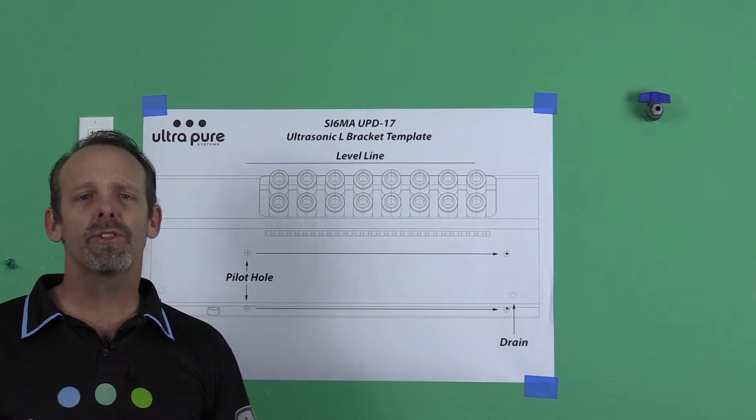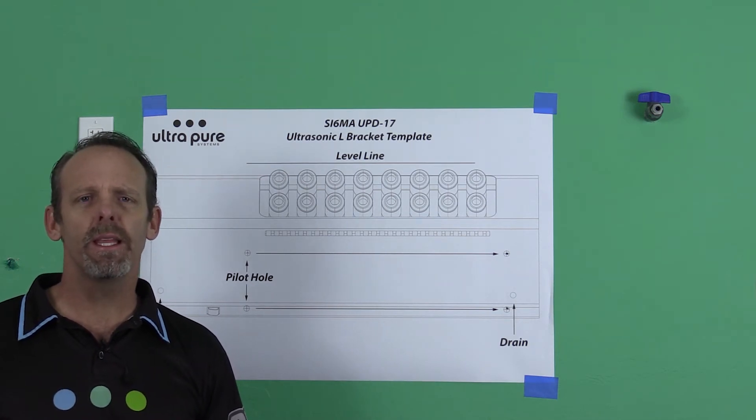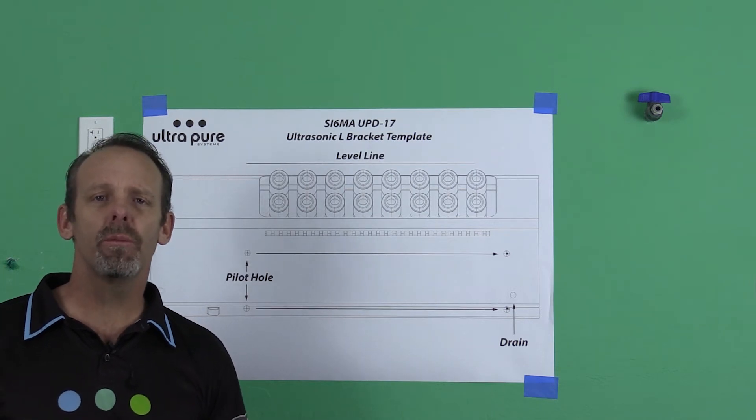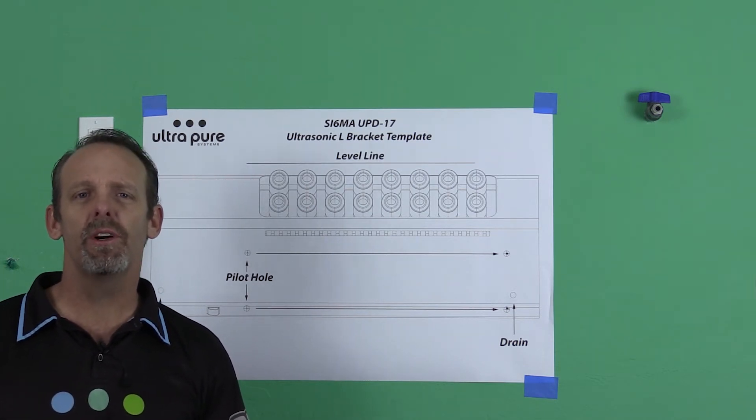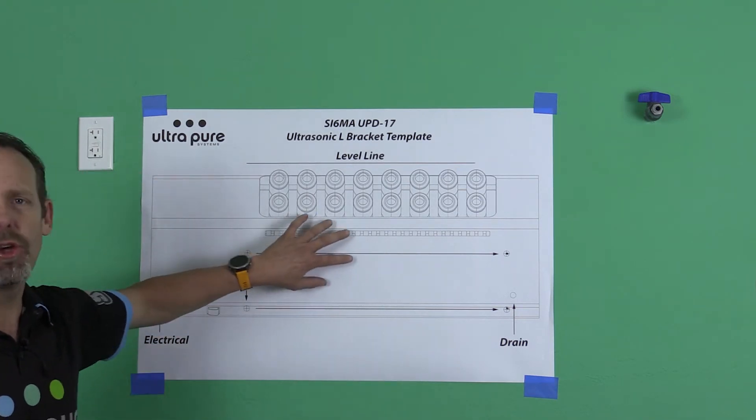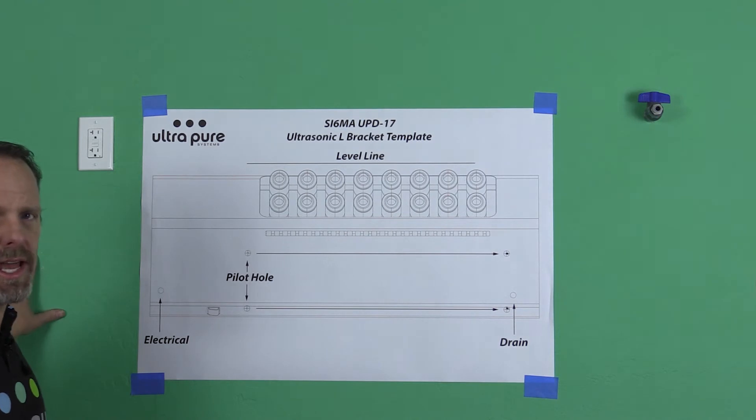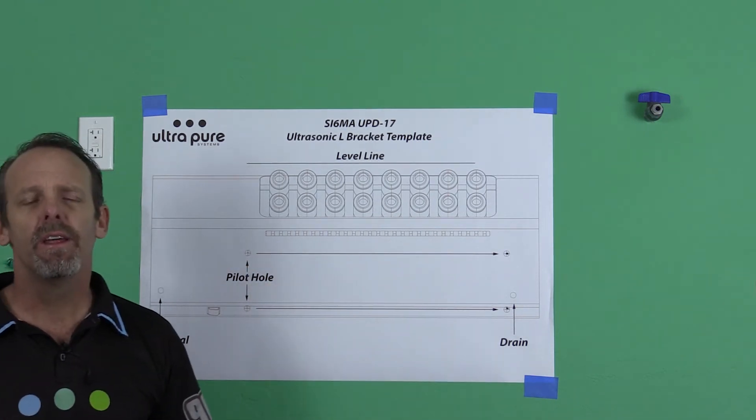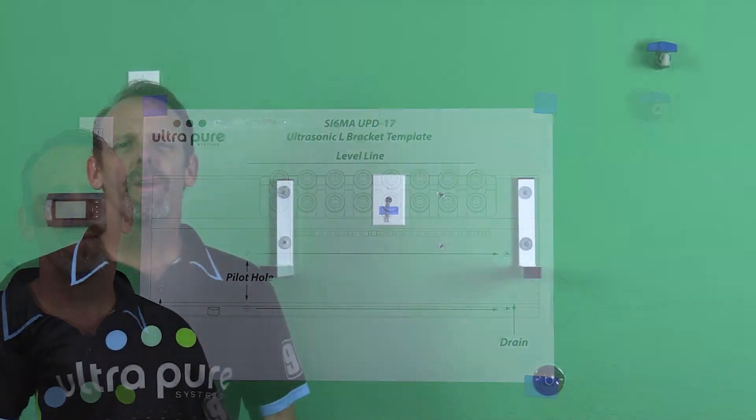Once the L brackets are on the wall, don't tighten them completely, but get them on the wall. And we're also going to hang the terminal that comes in the box with the 10-foot cord, RJ11 cord. We're going to hang it so it's behind the humidifier, or I'm sorry, on side of the humidifier, but we're going to run it behind the humidifier so you don't see the cord coming out of the wall.